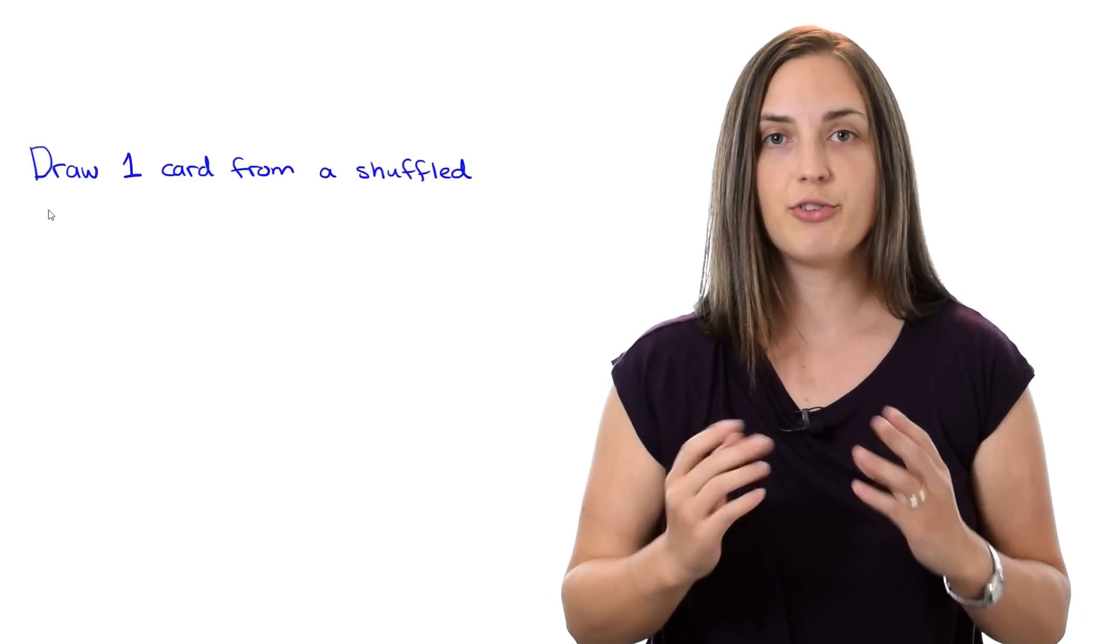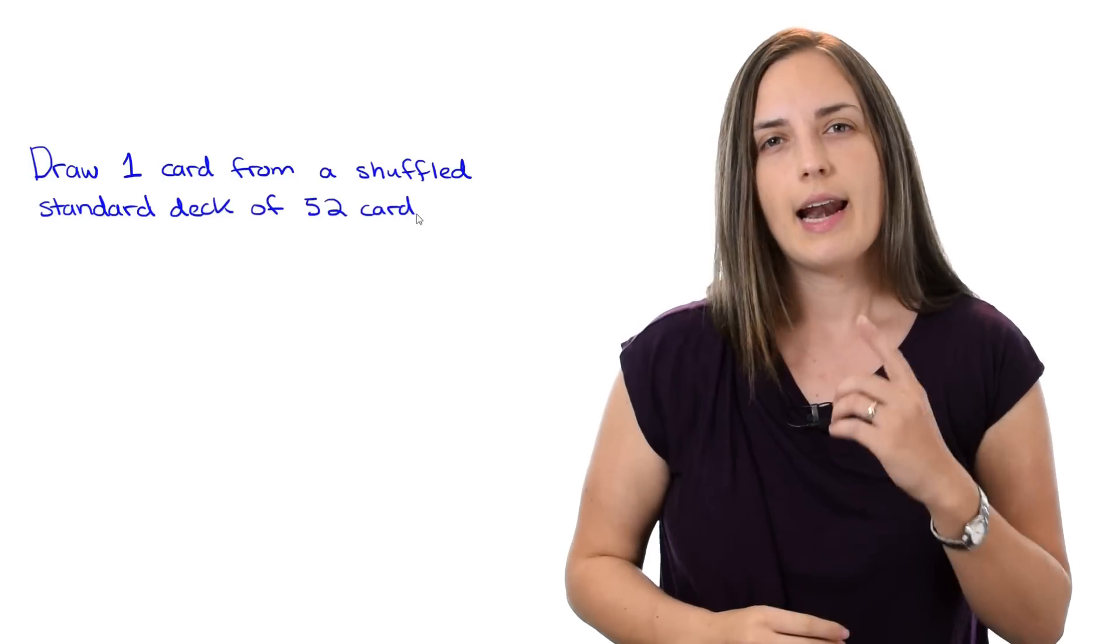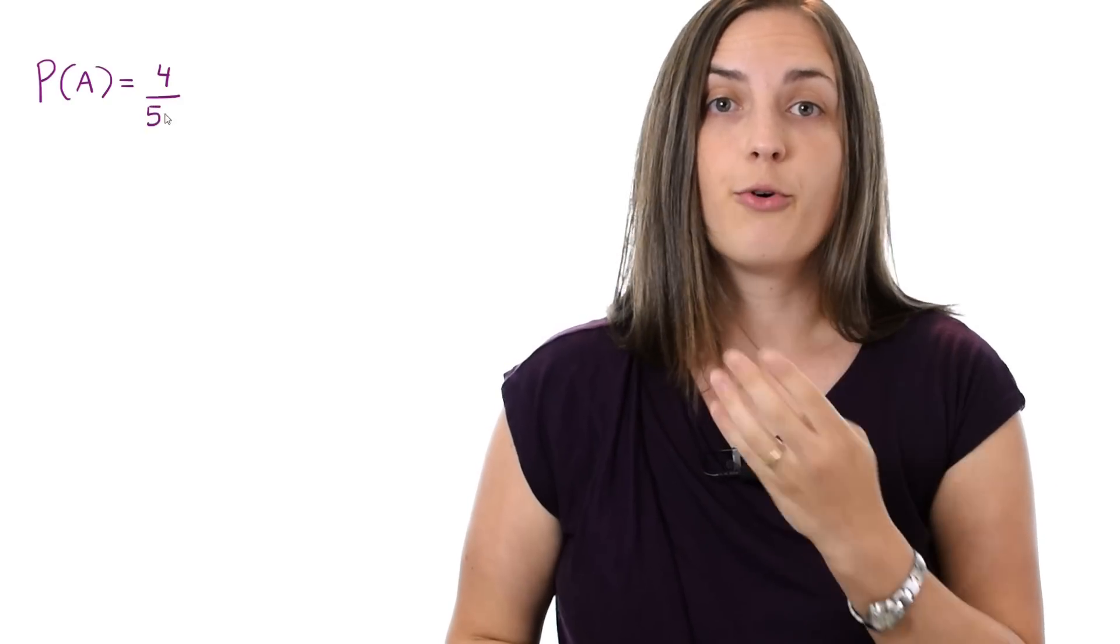So now let's phrase a more general question. Again suppose that I'm just picking one card from a shuffled deck of 52 cards. And I ask, what is the probability that the card I pick is an Ace? Well, it could be an Ace of Hearts or an Ace of Spades or an Ace of Diamonds or an Ace of Clubs. So there are four good choices and that means that my probability is 4 out of 52.